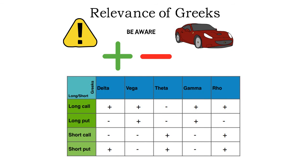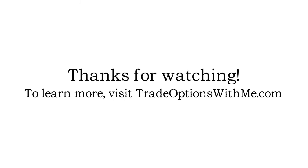Additionally, you can see that when you have a long call, delta will be positive, and this also holds true for gamma. This means that the more the price of the underlying increases, the more you gain on every $1 increase. The positive Vega means that an increase in volatility is profitable. Tables like these can help you keep track of the different option Greeks. To download it and learn more about options, you can visit tradeoptionswithme.com. But for now, thanks for watching.